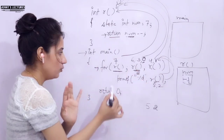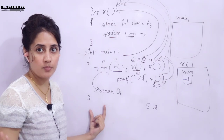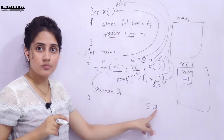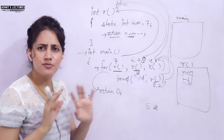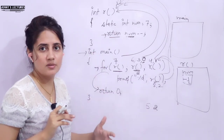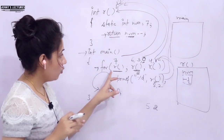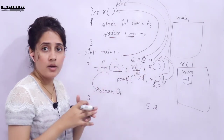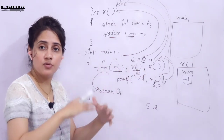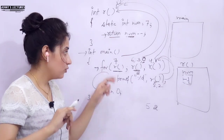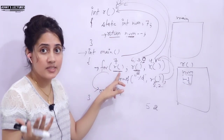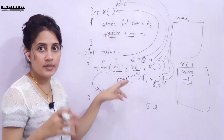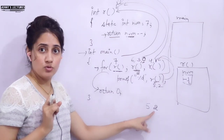Condition false — we exit the for loop, return 0, and exit the program. So the output you will get is 5 and 2. Please don't panic — just follow the execution process of the for loop step by step. You know how a for loop works and how function calls return values, so just follow those steps consistently.